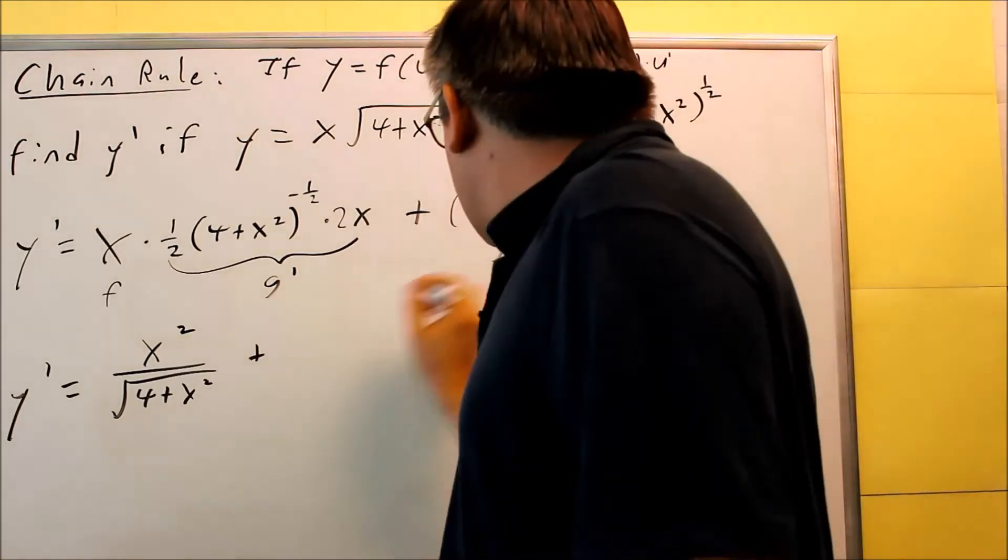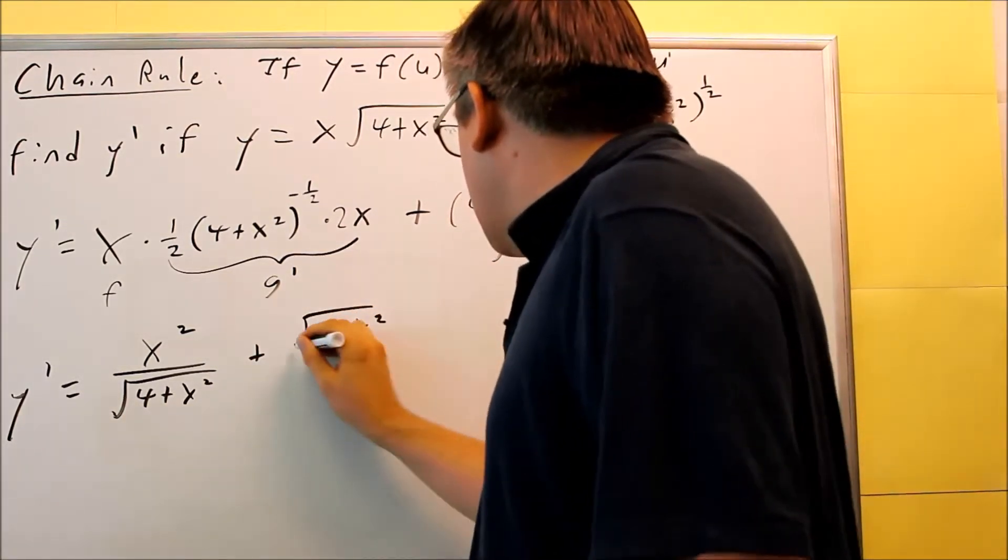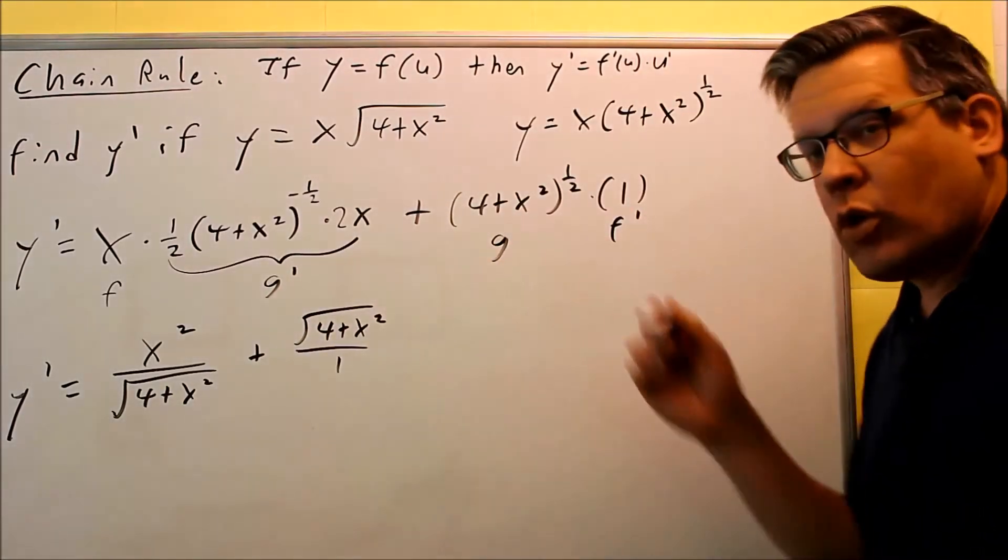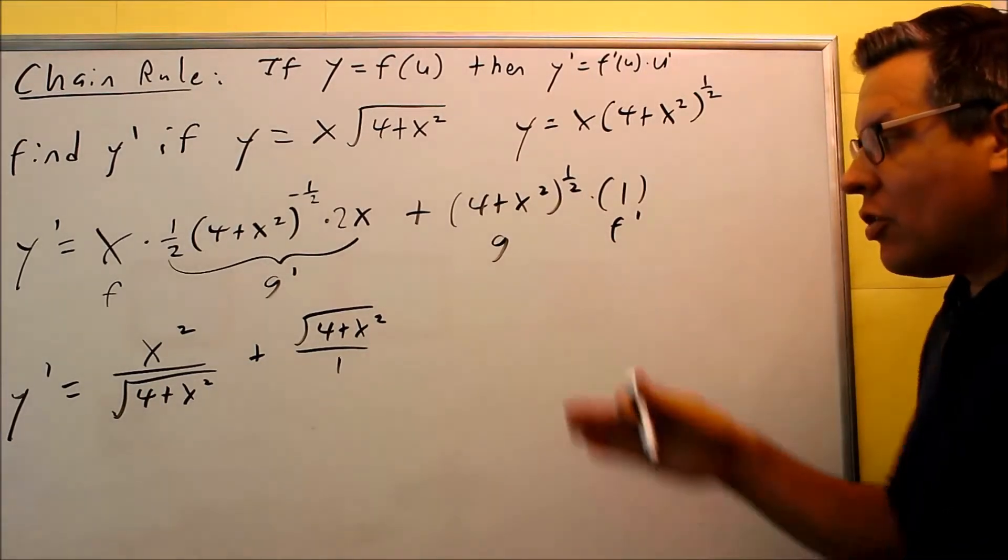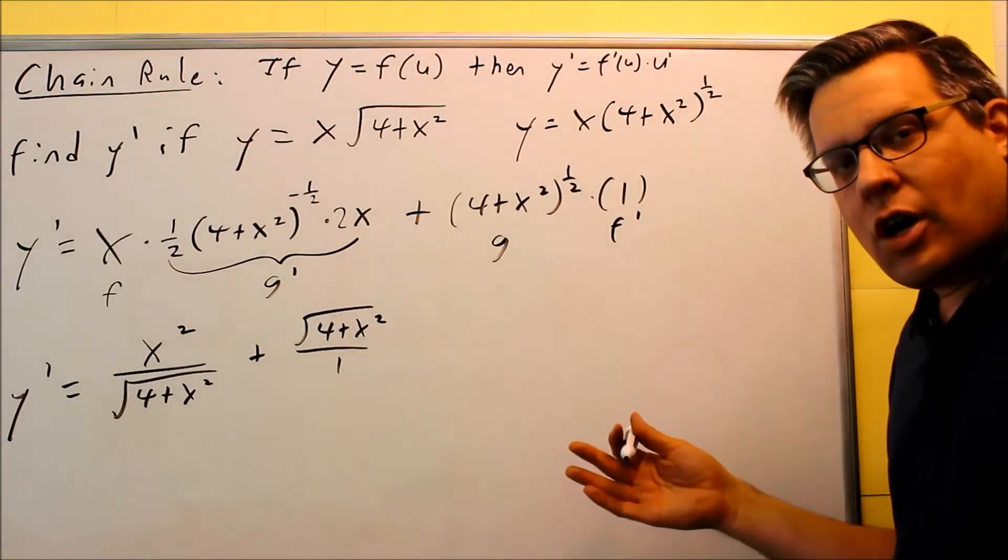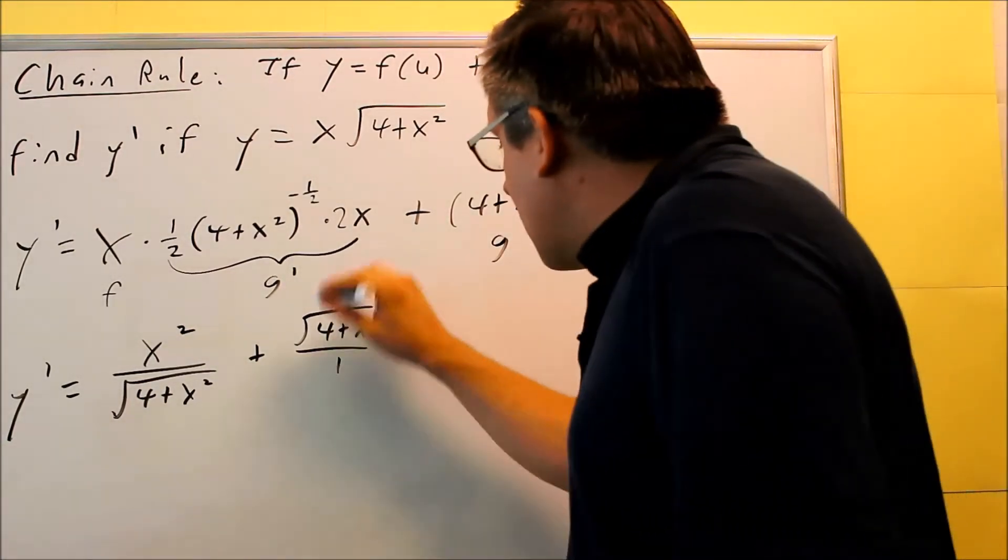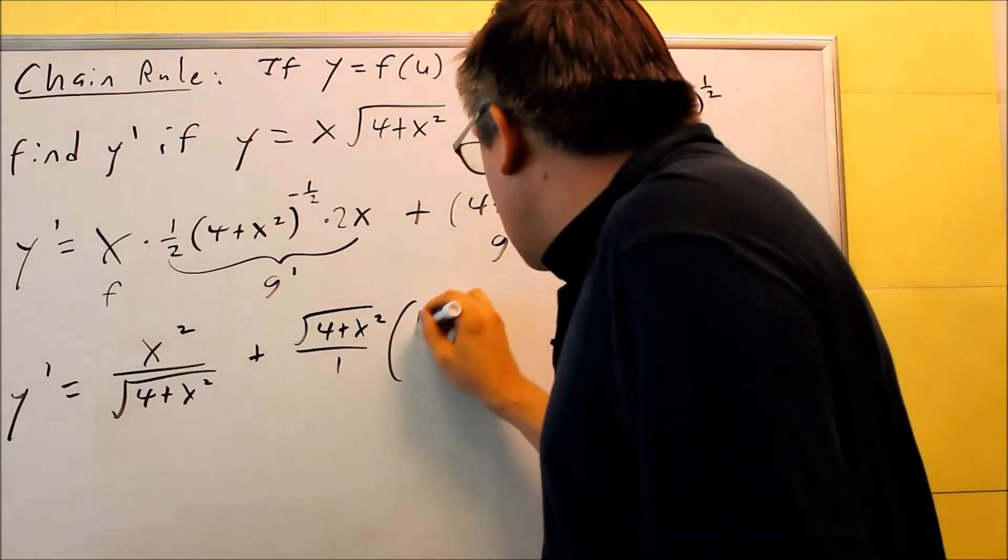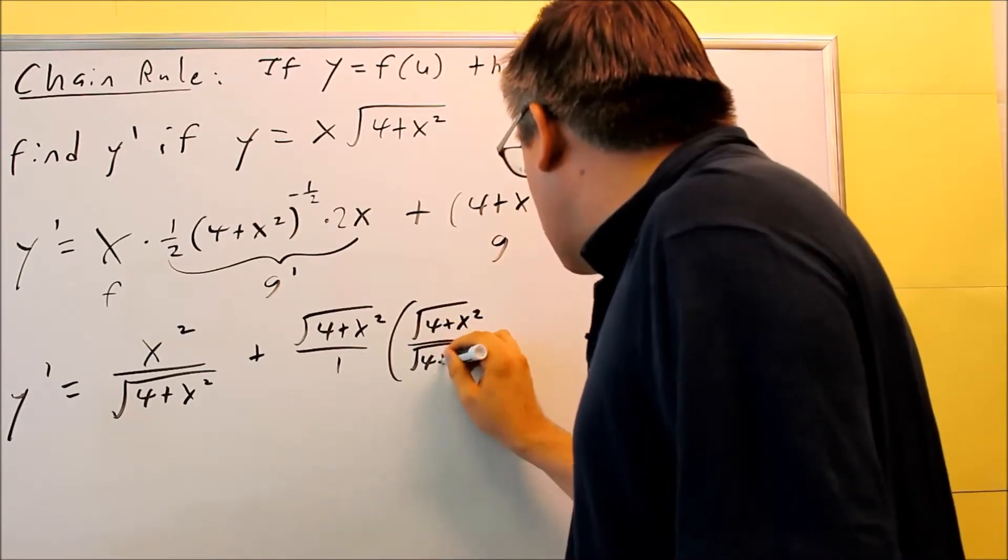And then I have plus, I can write this back as a square root again as well, √(4 + x²). And that's times 1. I'll just write it. I can write it over 1 if I want to as well as a fraction. And you can leave your answer in that form. Or if you're, depending on what kind of online homework system you're using or your teacher, they may want you to combine this together into a single fraction. So let's just go ahead and do that.